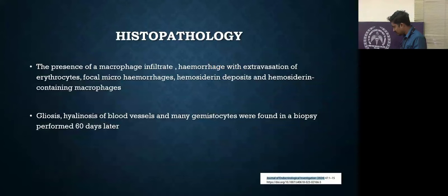And imaging findings: histopathology is all due to petechial hemorrhages. In acute phase, it shows presence of macrophage infiltrate, hemorrhage with extravasation of erythrocytes, focal microhemorrhages, hemosiderin deposits, and hemosiderin-containing macrophages. In chronic phase: gliosis, hyalinosis of blood vessels, and many gemistocytes were found in biopsy performed after 60 days later. These were all performed from biopsy and autopsy.